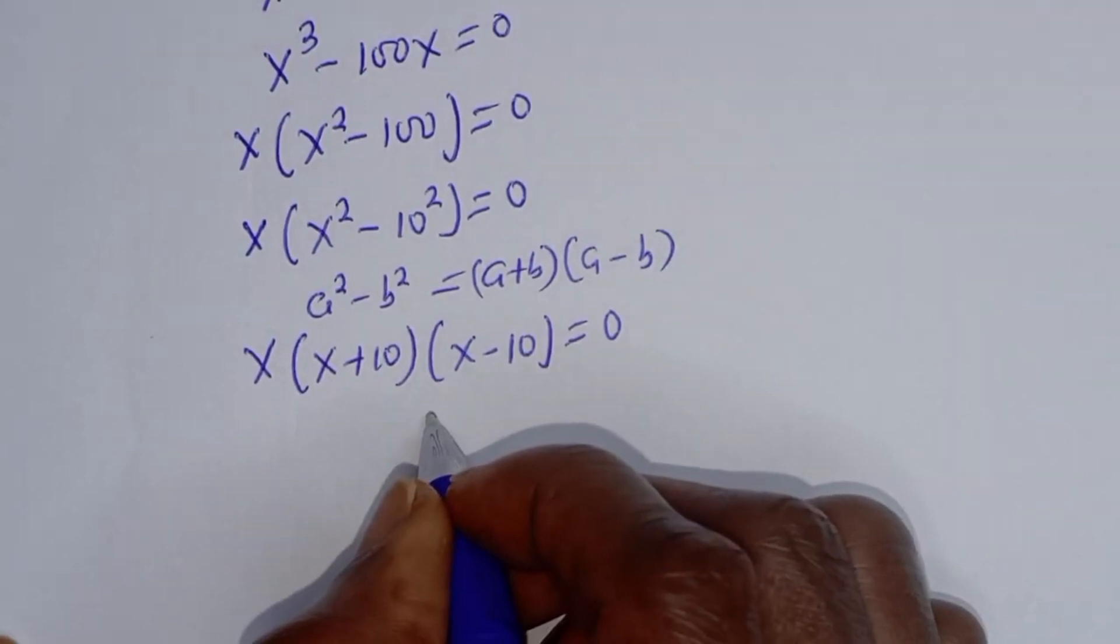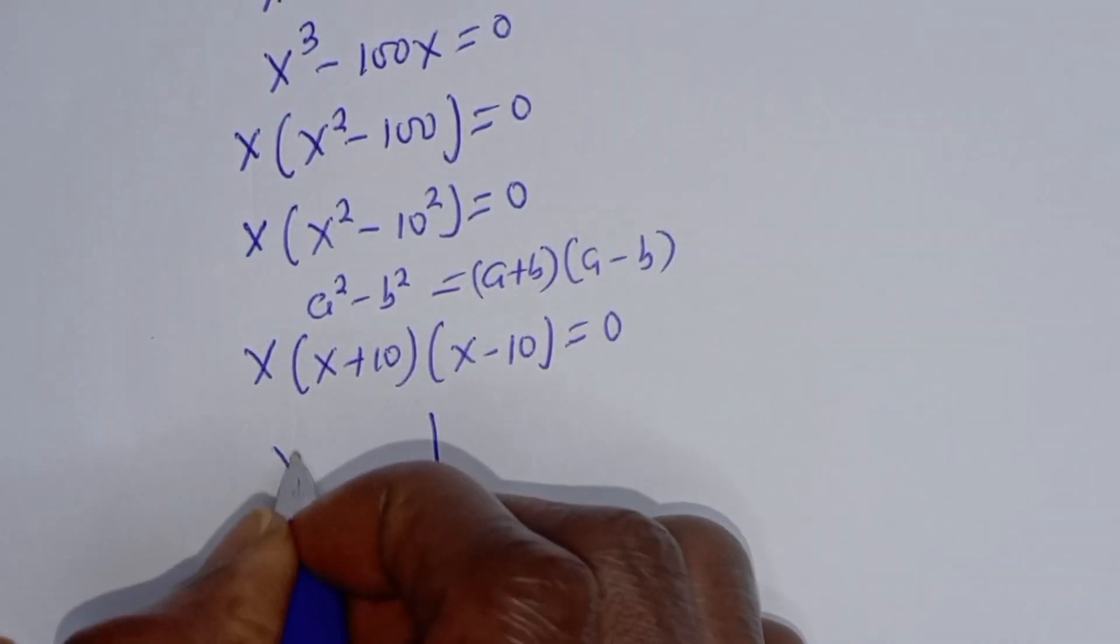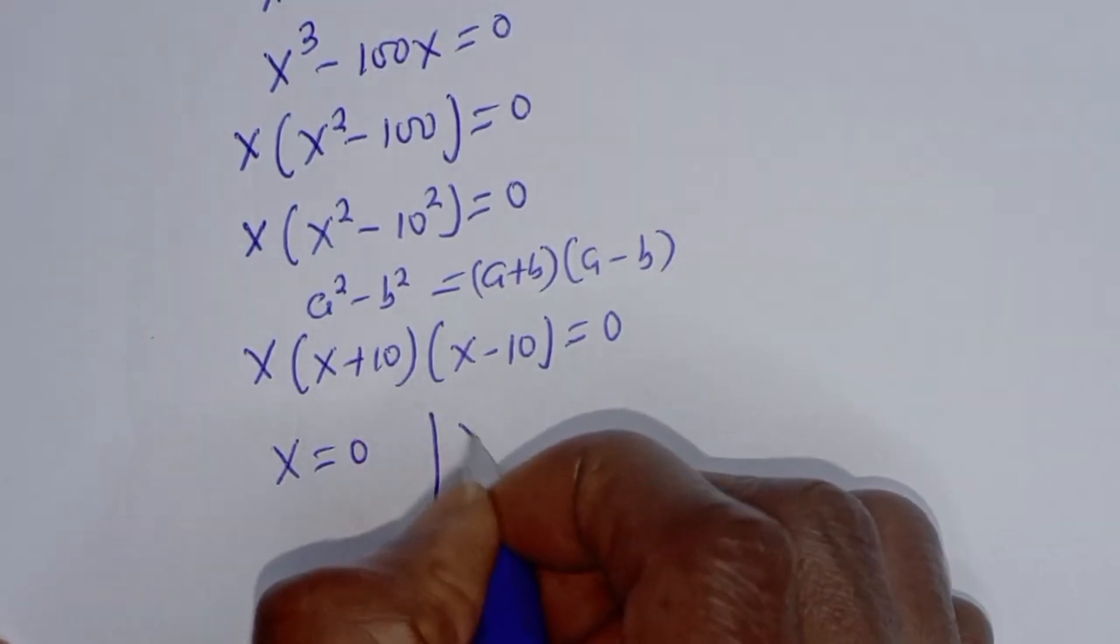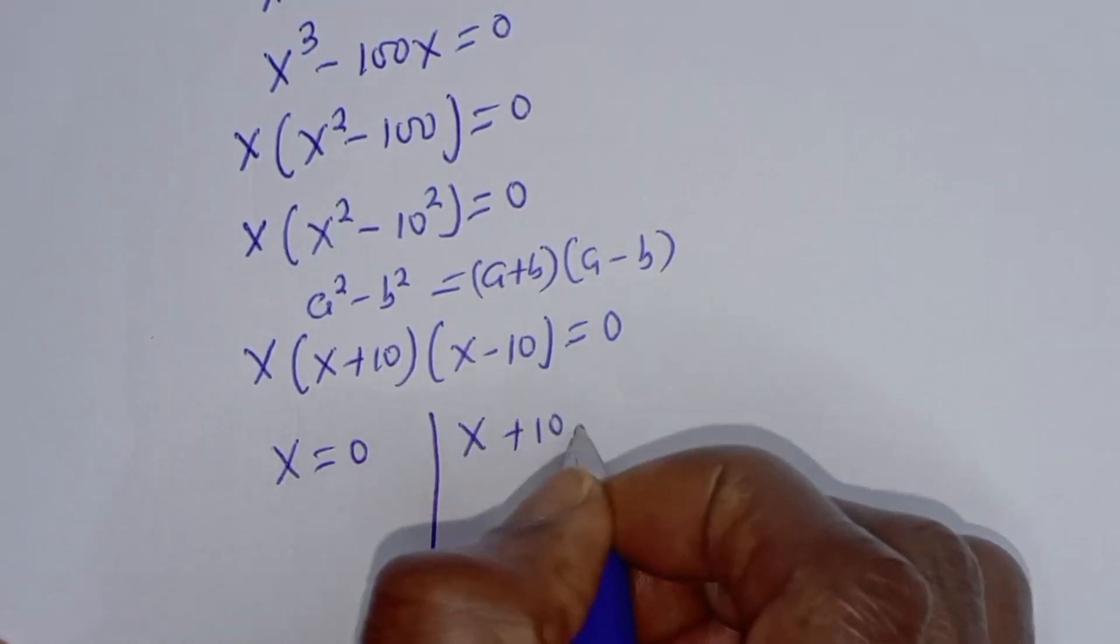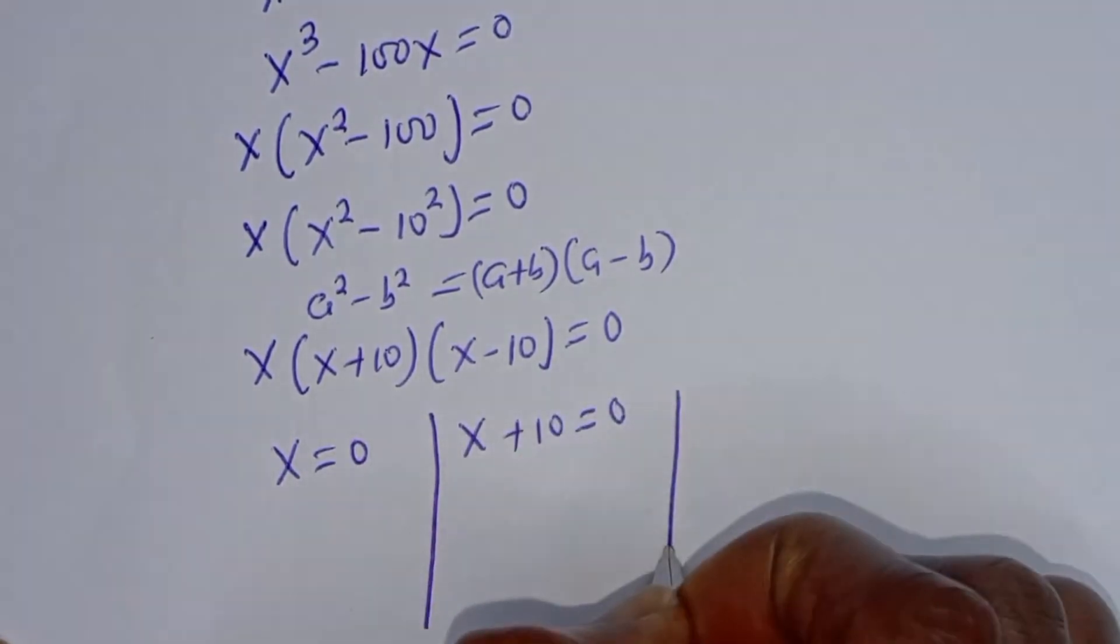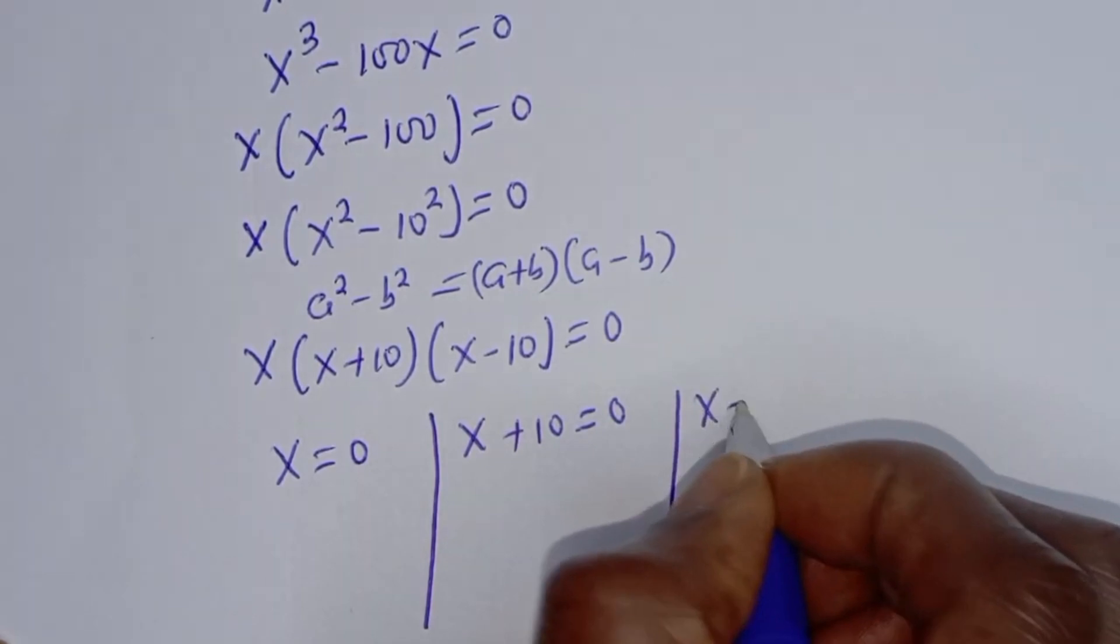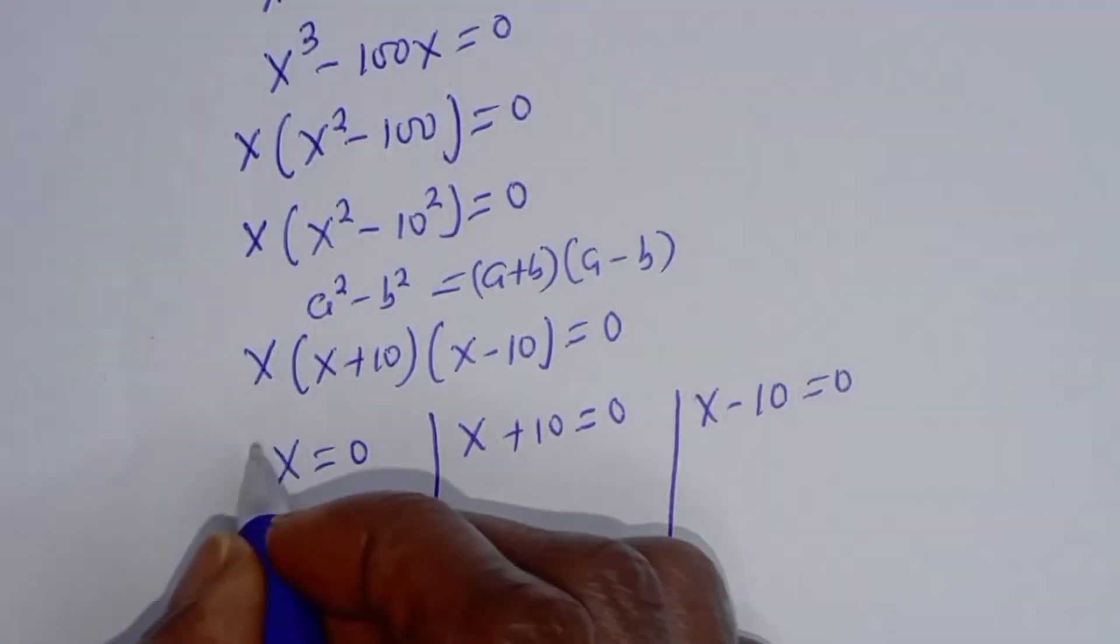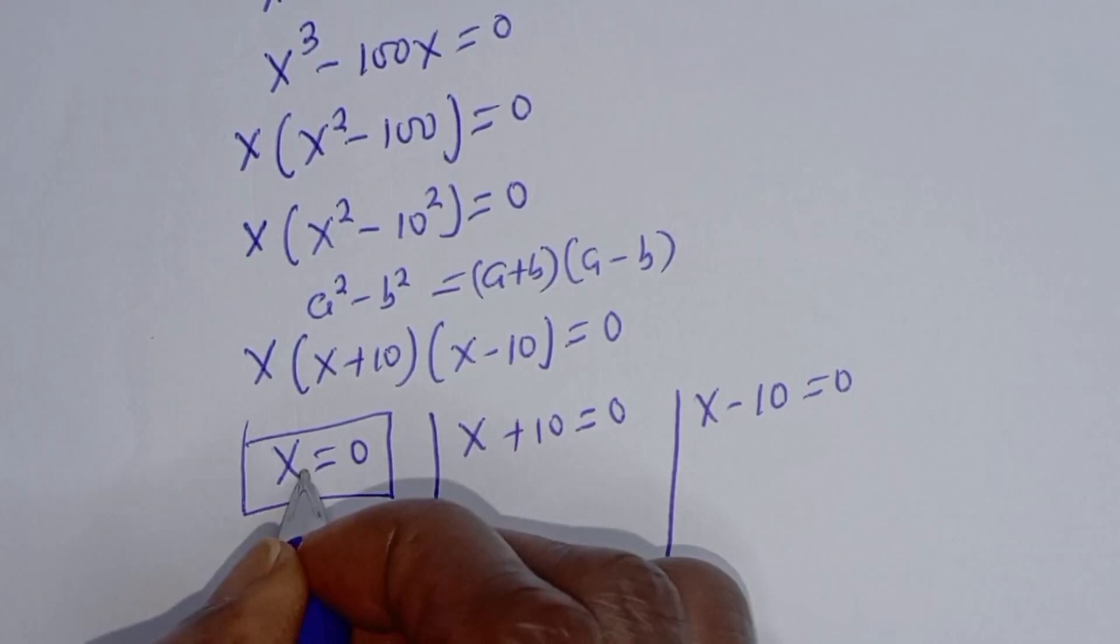Here there are three cases. The first case is x equals 0. The second case is x plus 10 equals 0. And the third case is x minus 10 equals 0. From here, x equals 0. This is the first value of x. Let's call this x₁.